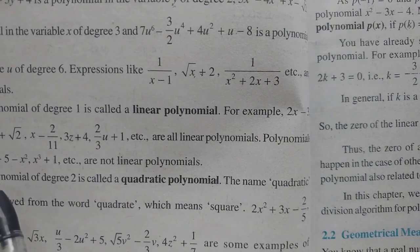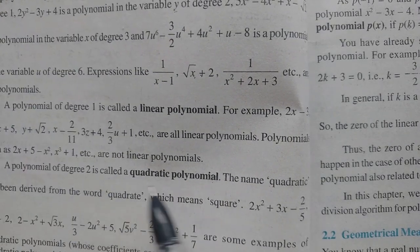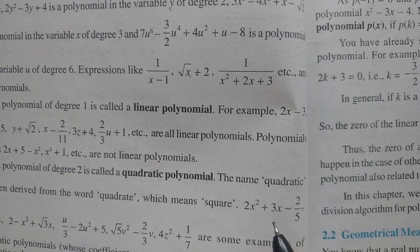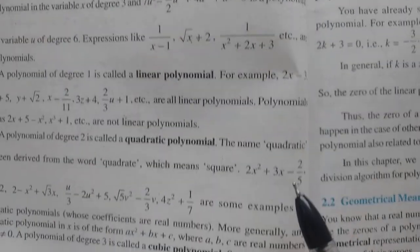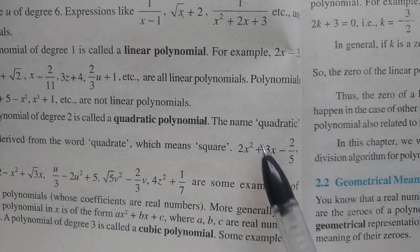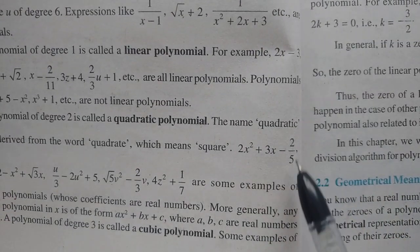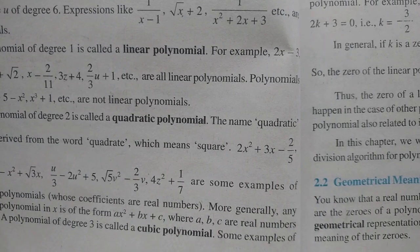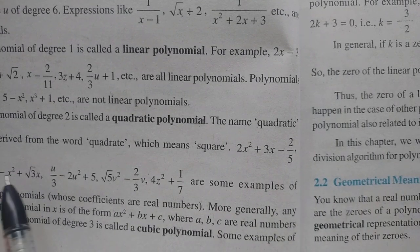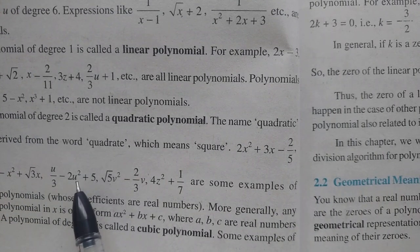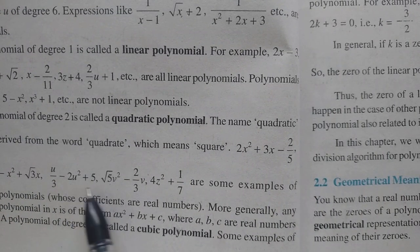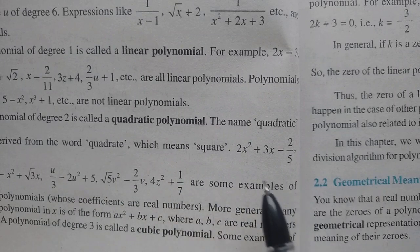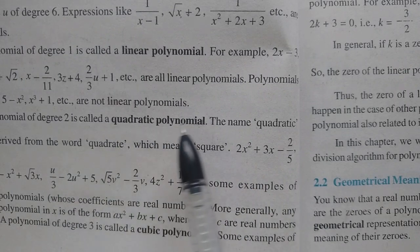A polynomial of degree 2 is called a quadratic polynomial. Here are the examples: 2x squared plus 3x minus 2/5 — you can understand these. All are examples of quadratic polynomials.